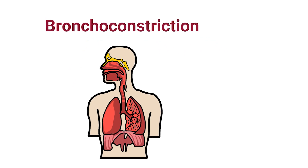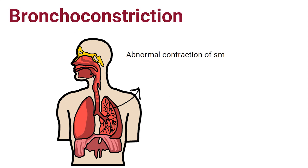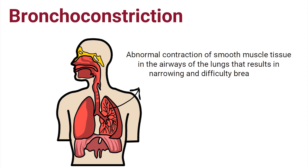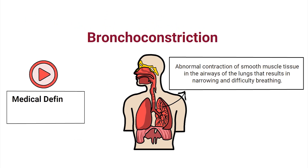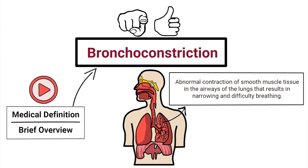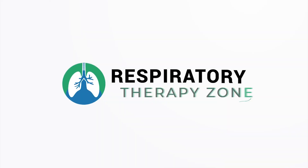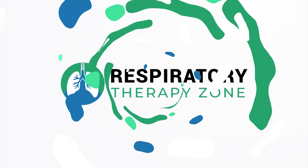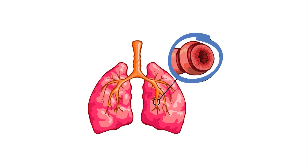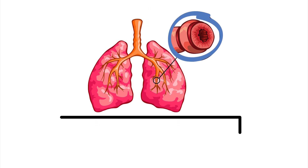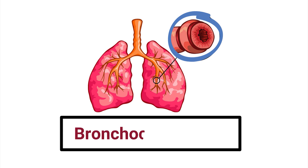Bronchoconstriction is characterized by the abnormal contraction of smooth muscle tissue in the airways of the lungs, resulting in narrowing and difficulty breathing. As previously mentioned, when the muscles that line the bronchi within the lungs begin to tighten and become narrow, this is referred to as bronchoconstriction.